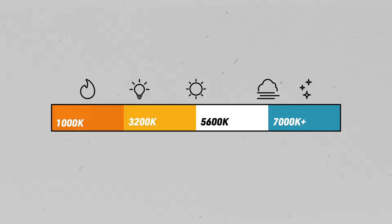Colour temperature is measured in Kelvins, with warmer light sources around 1,800 to 3,200 Kelvin on one end of the scale, and cooler light between 6,500 and 10,000 on the other end.